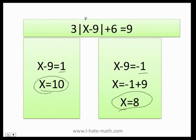If you plug 10 here, what do you get? Well, 10 minus 9 is 1. Absolute value of 1 is 1. So 3 times 1 is 3, 3 plus 6 is 9. Perfect!